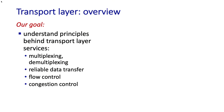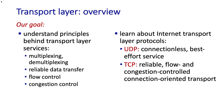Our approach, as always, is going to be to start with principles — how multiplexing and demultiplexing can be done, reliable data transfer, flow and congestion control. We'll start by looking at the principles underlying how these services might be implemented, and then look at how those principles are embodied in internet transport protocols. We'll examine UDP, which offers a connectionless best-effort service between communicating processes, and TCP, which offers reliable, flow-controlled, and congestion-controlled connection-oriented transport.